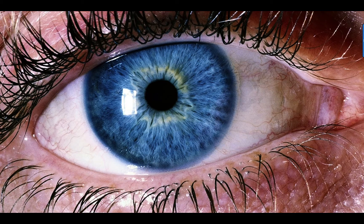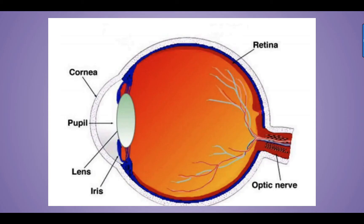The pupil is like a window into the eye that is covered by very high quality, flexible, transparent, and smooth material. This covering is called the cornea. Almost all light that reaches the pupil goes through the cornea and enters the eye — only a small fraction of it is reflected. When a person sees an object, light from the object enters the eye through the cornea and through the lens, which is another high quality transparent material.